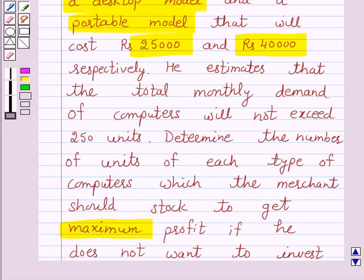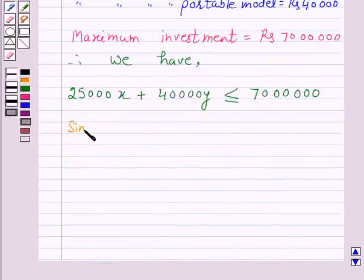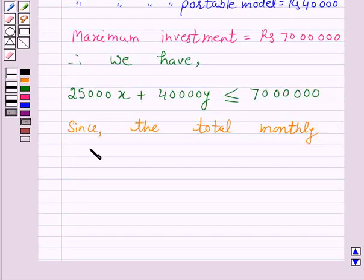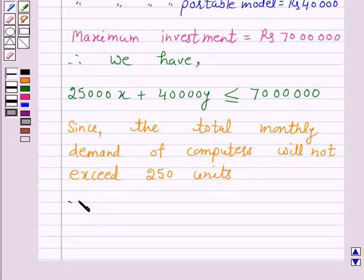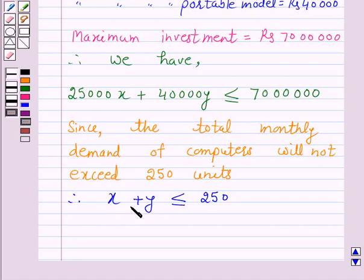We are also given that the total monthly demand of computers will not exceed 250 units. Since the total monthly demand will not exceed 250 units, we have x + y ≤ 250 — that is, the number of units of desktop model stocked plus the number of units of portable model stocked should be less than or equal to 250.